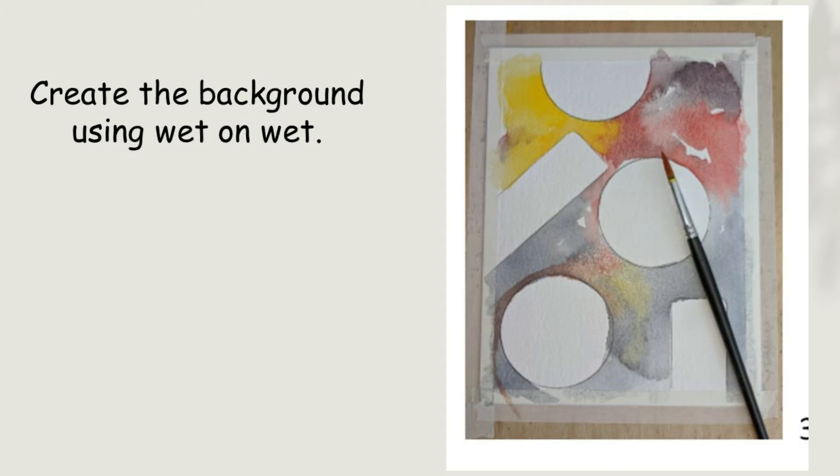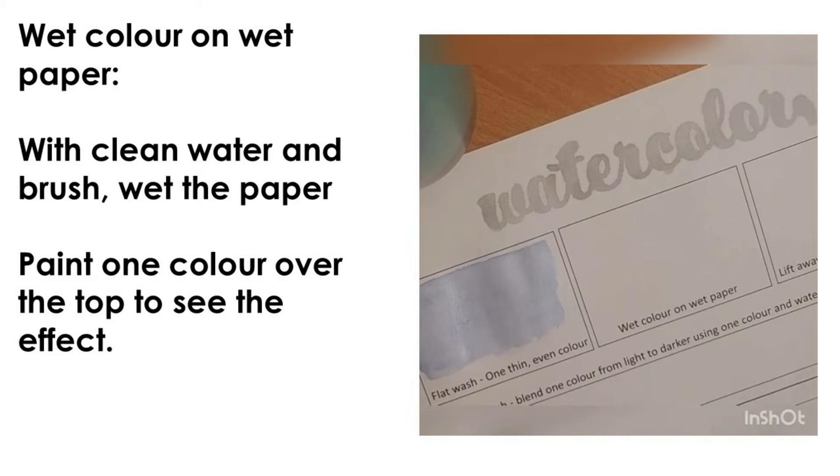We will make the background to the shapes by using the wet on wet technique. If you remember, this is when we wet the paper with a clean brush and then paint over this with one colour. This spreads the paint quickly on the paper.